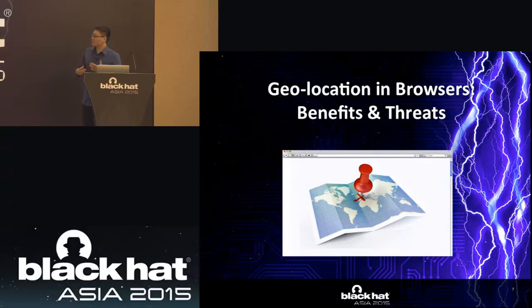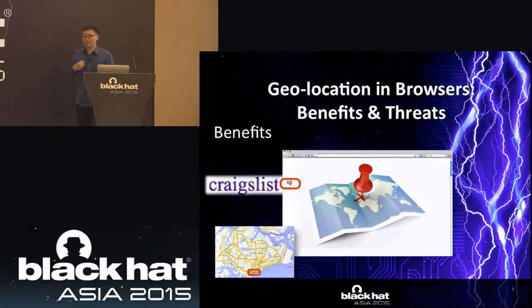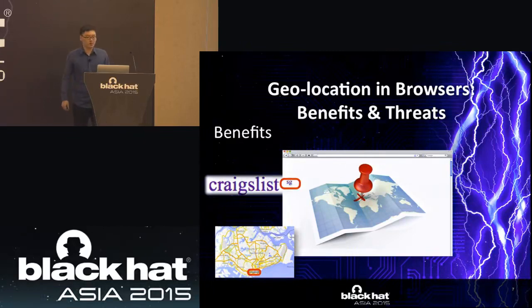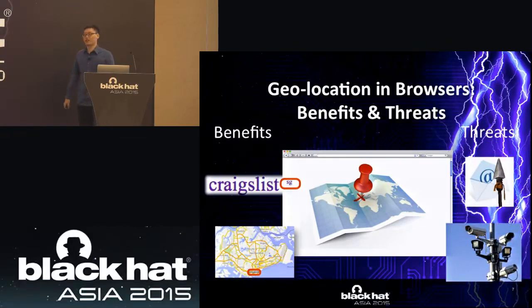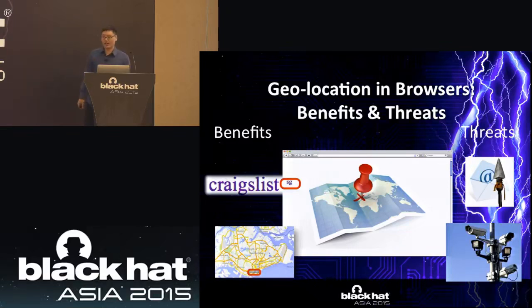So what do these geolocations provide to us? On one hand, allowing browsers and websites to access our geolocations provides benefits — for example, Craigslist can provide city-specific sites for buying or selling second-hand stuff, and Google Maps lets us locate our current place and search routes. However, on the other hand, this also introduces new threats. Based on our geolocations, an attacker can track us, do spear phishing, and launch targeted attacks to expose more private information.